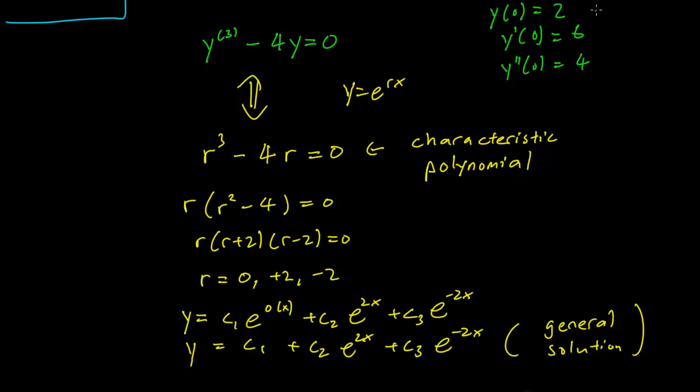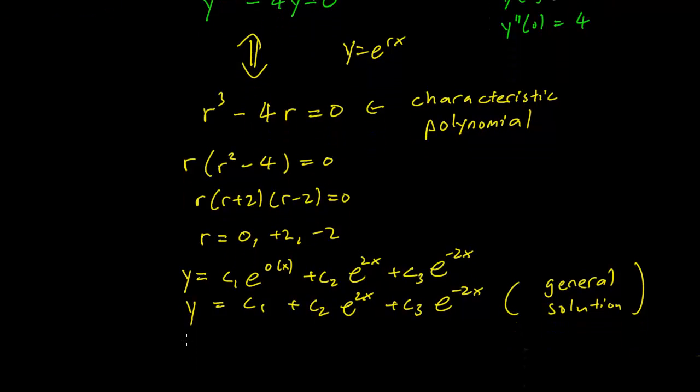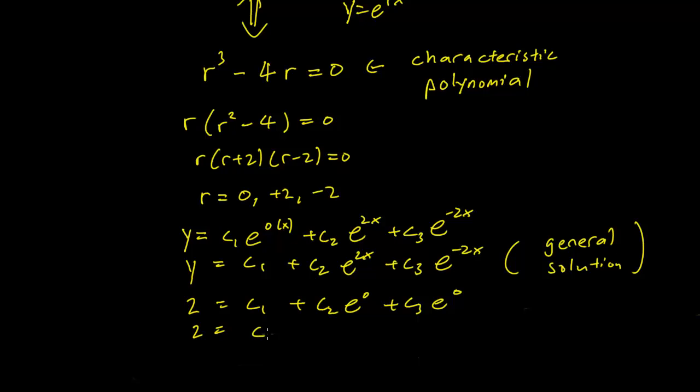The first one says that when x equals 0, y equals 2. So we can just plug that in this equation: c₁ + c₂e^0 + c₃e^0. And we have 2 = c₁ + c₂ + c₃. That's our first equation involving the c's.